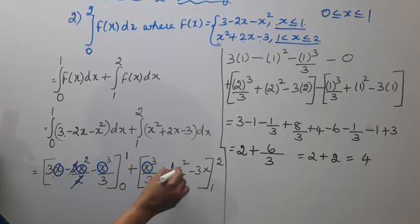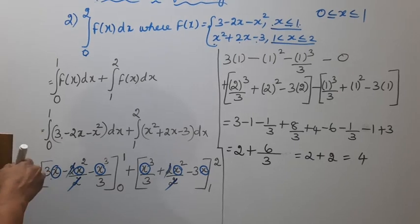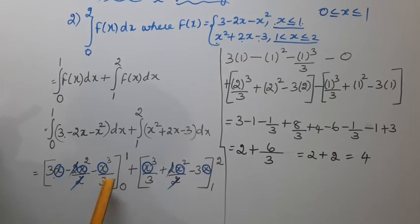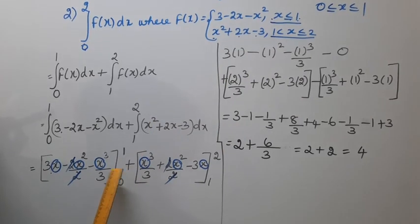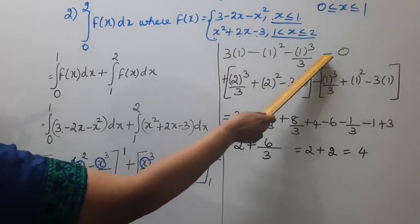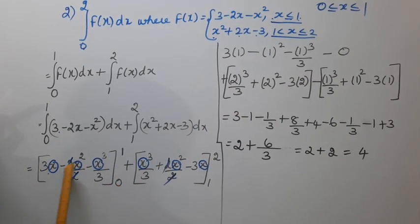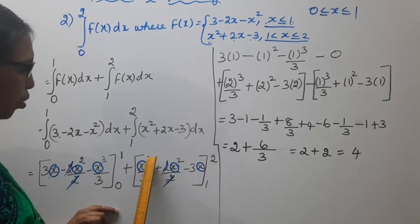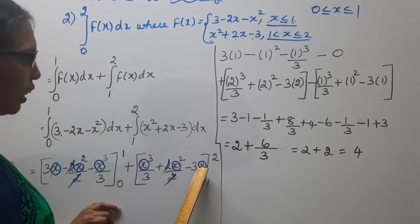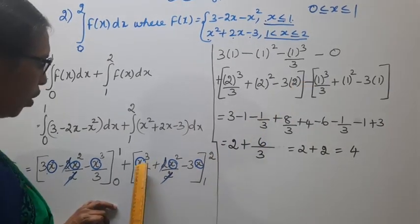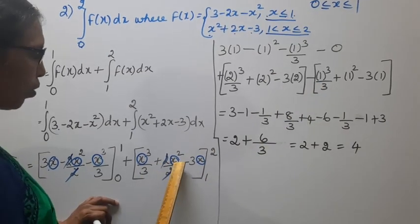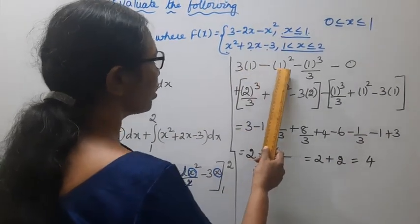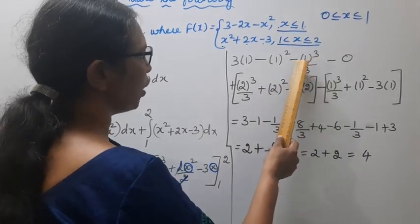Apply upper limit minus lower limit. For the first integral: 3(1) minus 1² minus 1³/3, minus the lower limit value of 0. For the second integral: 2³/3 plus 2² minus 3(2), minus [1³/3 plus 1² minus 3(1)]. So: 3 minus 1 minus 1/3 for the first part.